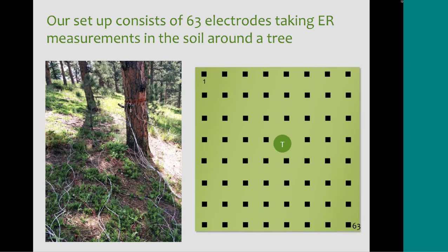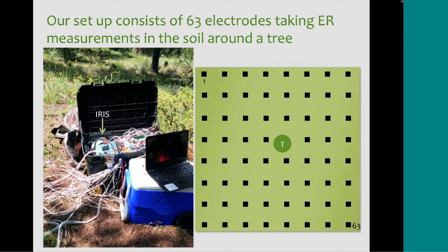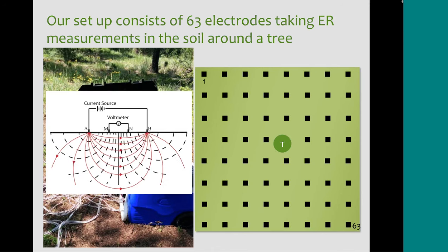Our setup specifically is around a ponderosa pine, and we have an eight-by-eight grid of stainless steel electrodes in the ground — there's only 63 because the tree is in the way of one electrode. We have an IRIS Syscal Pro, which is what we use to collect the electrical resistivity data, and a car battery which draws the current into the ground. Electrodes A and B draw current into the ground, and M and N measure the voltage returned from the soil, which is how we get the resistivity.